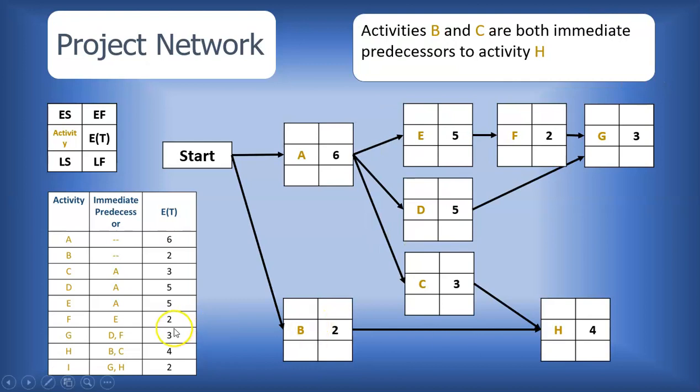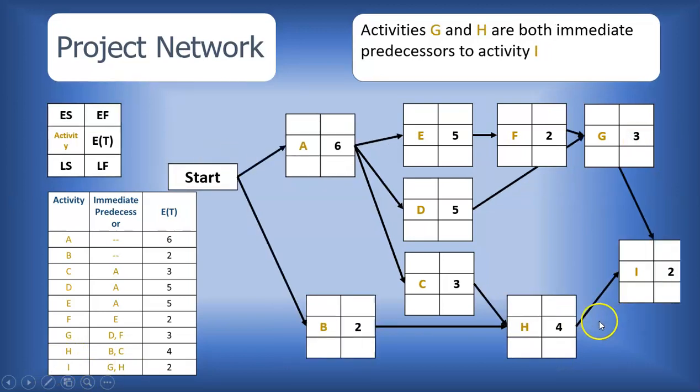Last but not least, we have activity I, which immediately follows activity G and activity H. So of course, we will have arrows coming from both activity G and activity H to activity I.